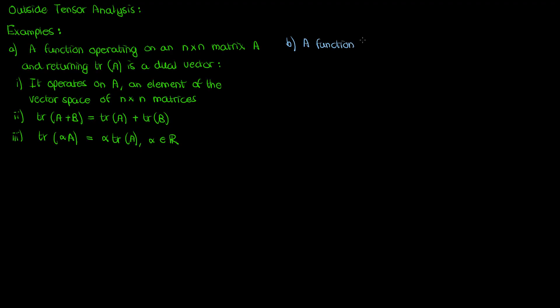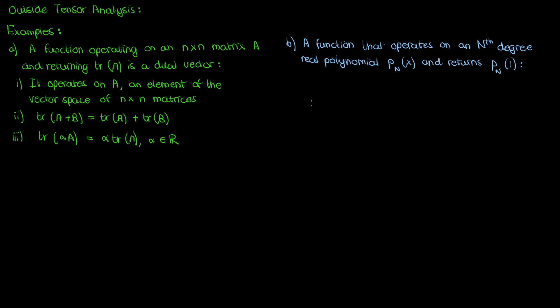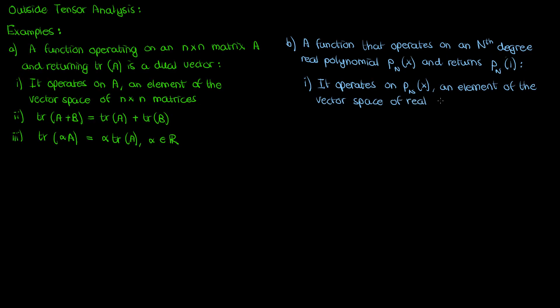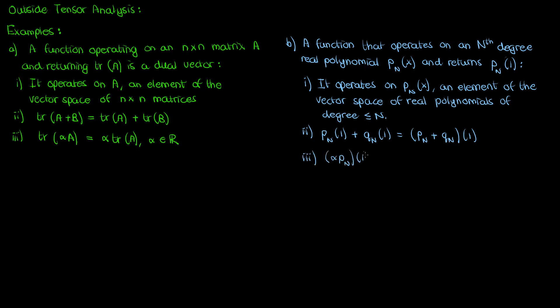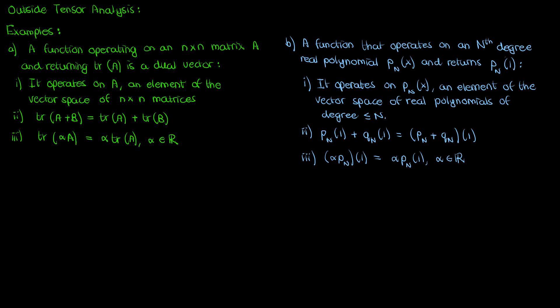Another abstract example: a function which operates on an nth-degree real polynomial p sub n of x and returns the value of that polynomial at x equals 1. This function is also a dual vector because it operates on a polynomial — a vector element in the vector space of real polynomials of nth degree or less — and returns a real number. It obeys the summation rule since applying the function to the sum of two polynomials equals the sum of the function applied to each individually, and it obeys the scaling rule: p sub n of 1 times alpha equals alpha times p sub n of 1.